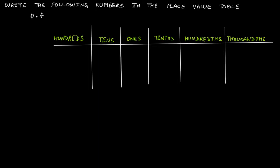Write the following numbers in the place value table. The first number is 0.4. What you have to do is make a table and assign the digits to their respective place values. In this example you have 0.4, so 0 is at the unit's place (that is, the ones place) and 4 is at the tenth's place.